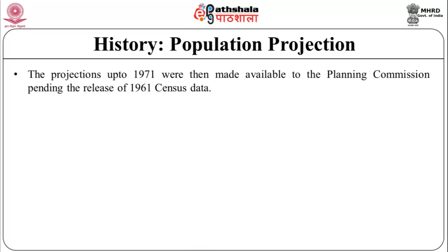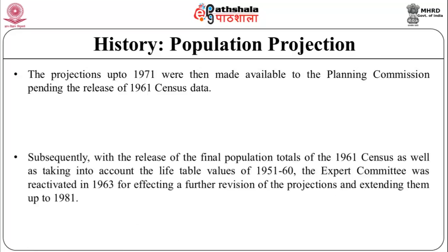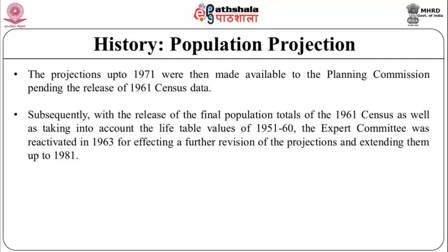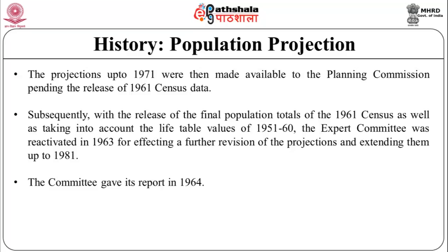The projections up to 1971 were made available to the Planning Commission pending the release of 1961 census data. Subsequently, with the release of the final population total of the 1961 census as well as taking into account the life table values of 1951 to 1960, the Expert Committee was reactivated in 1963 for effecting a further revision of the projections and extending them up to 1981. The Committee gave its report in 1964.